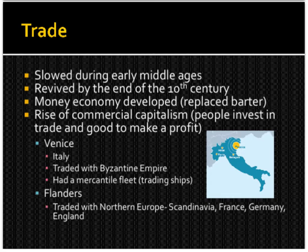Venice is in Italy and traded with the Byzantine Empire, and they had a fleet of ships. Flanders traded with Northern Europe — Scandinavia, France, Germany, and England. Let's go ahead and look at some images of Venice and Flanders.